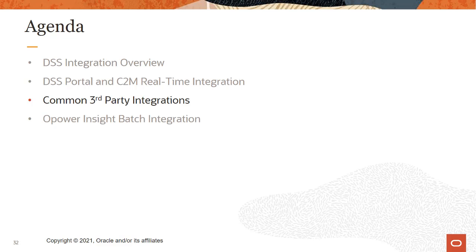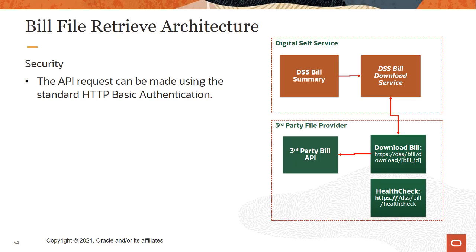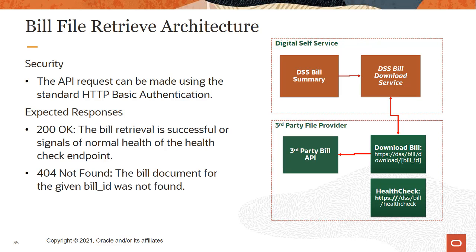Let's look at common integrations that are used to enhance a customer's online experience with the utility. The first integration to understand is bill file retrieval. DSS provides customers with the ability to view their bills. Because customer billing data storage is typically managed through third-party vendors, DSS must integrate with the utility's custom solutions through REST APIs. This integration makes it possible for customers to download PDF copies of their bill statement. The bill file retrieval API request can be made using the standard HTTP basic authentication. When a customer goes to the DSS bill summary and triggers the DSS bill download service, DSS sends the bill ID to the third-party bill API. Typically, DSS expects an OK or not found response. 200 OK means the bill retrieval is successful or signals normal health of the health check endpoint. 404 not found means the bill document for the given bill ID was not found.